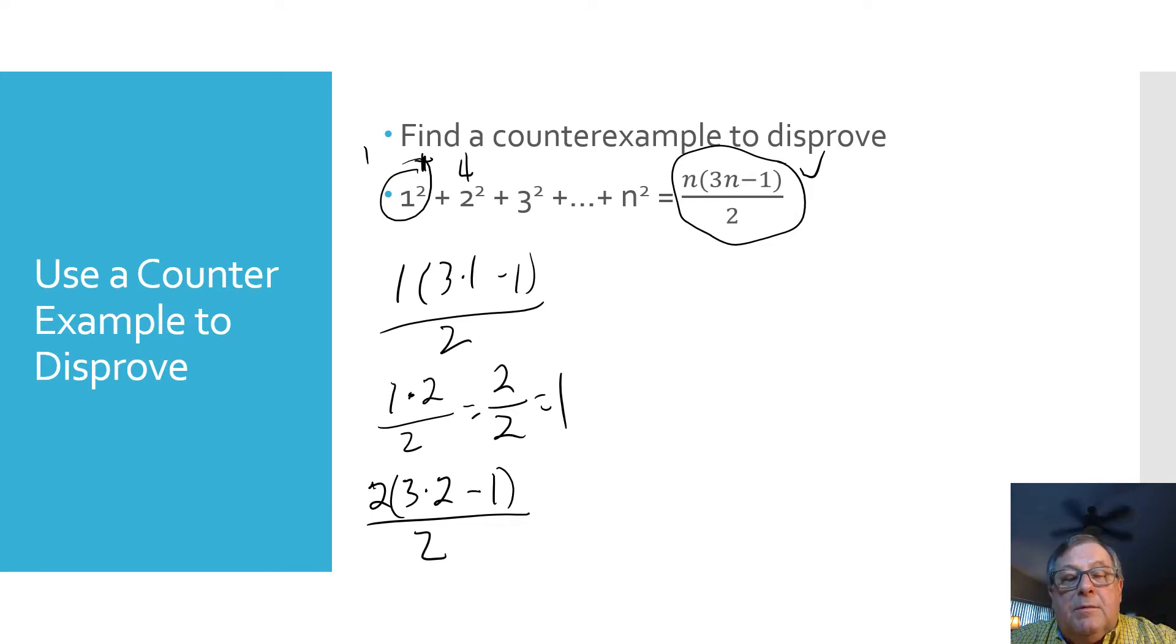Three times two is six, and six minus one is five. So now we've got two times five over two. Two times five is ten divided by two, and that equals five. So that's a true statement because here we had one plus four, which is equal to five.